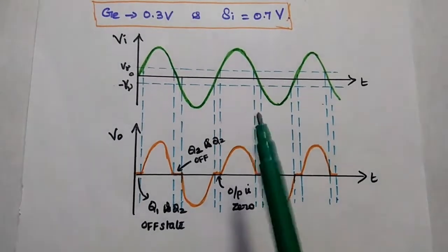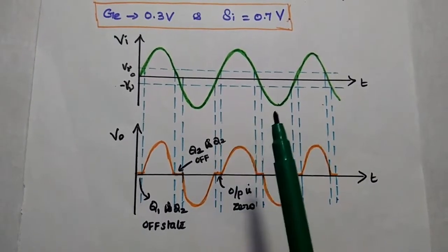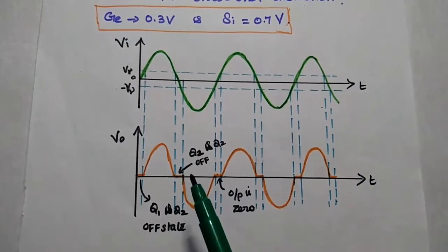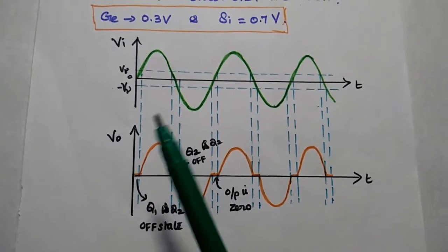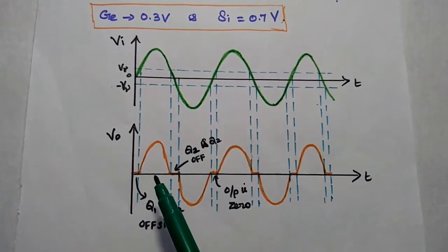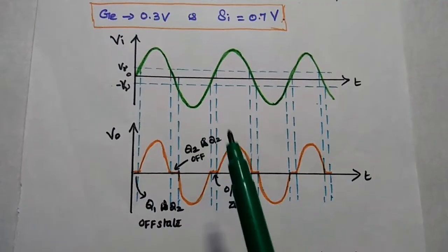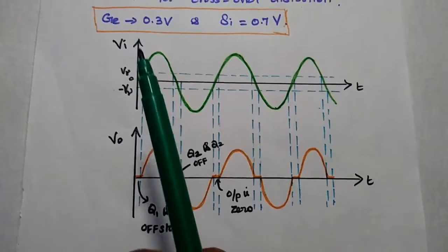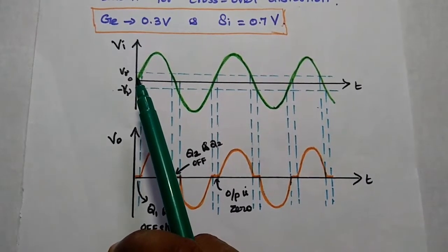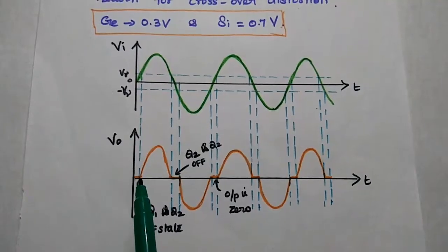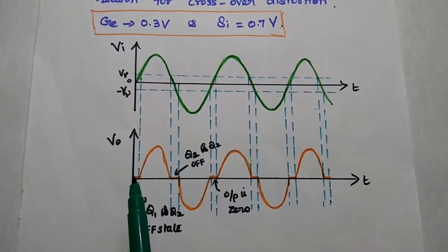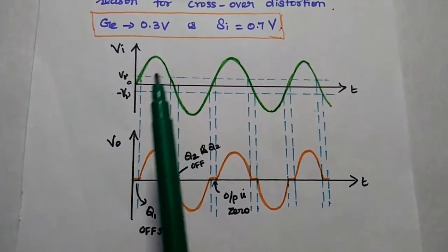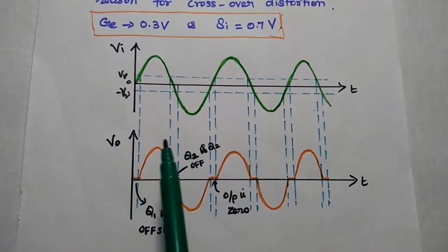Let's consider input voltage and output voltage signals for this class B amplifier. In class B amplifier, two transistors Q1 and Q2 are used. During the positive half cycle, Q1 is in on condition. During the negative half cycle, Q2 is in on condition. V gamma is the cut-in voltage. Whenever the input voltage is less than this cut-in voltage, there is no current conduction in the transistor and there is no output. Whenever the input voltage is greater than the cut-in voltage, then only transistor Q1 starts conducting.